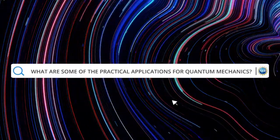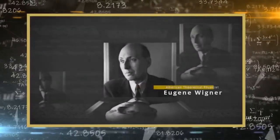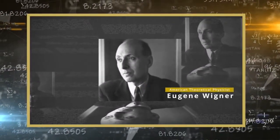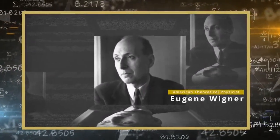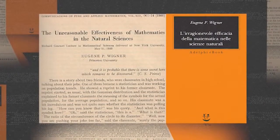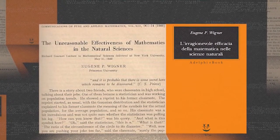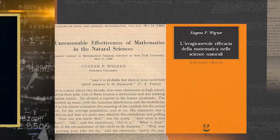Our whole world, all around you, is the way it is because we understand quantum mechanics. A physicist by the name of Eugene Wigner wrote an article once, something to the effect of the unreasonable effectiveness of mathematics in the natural sciences.